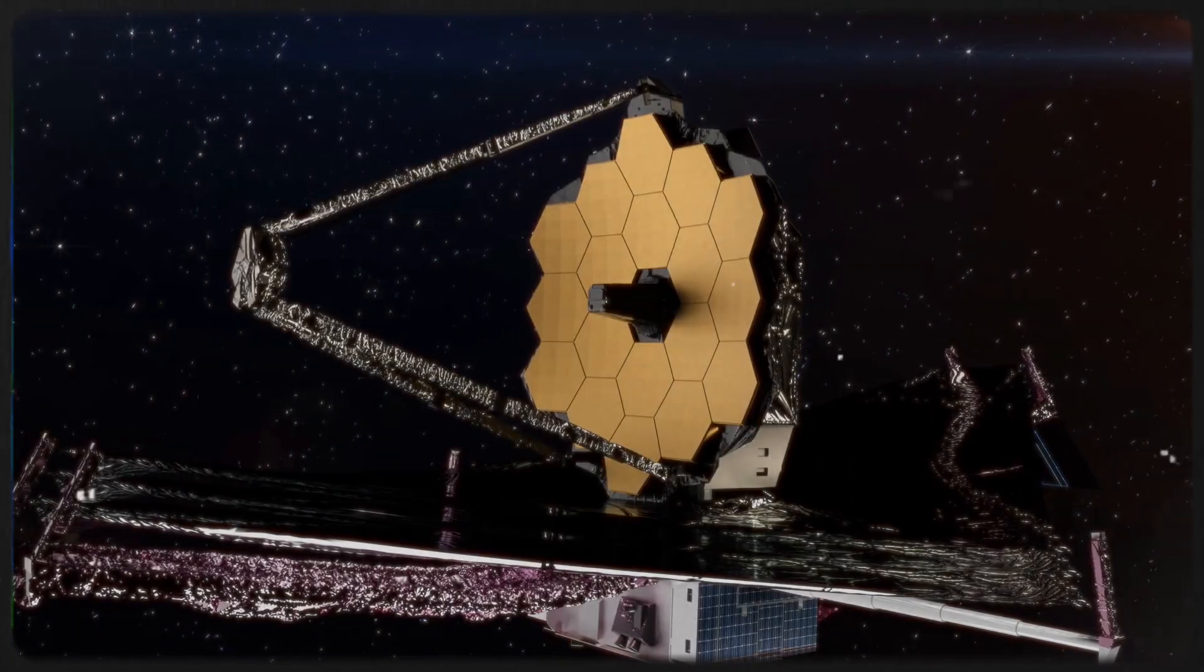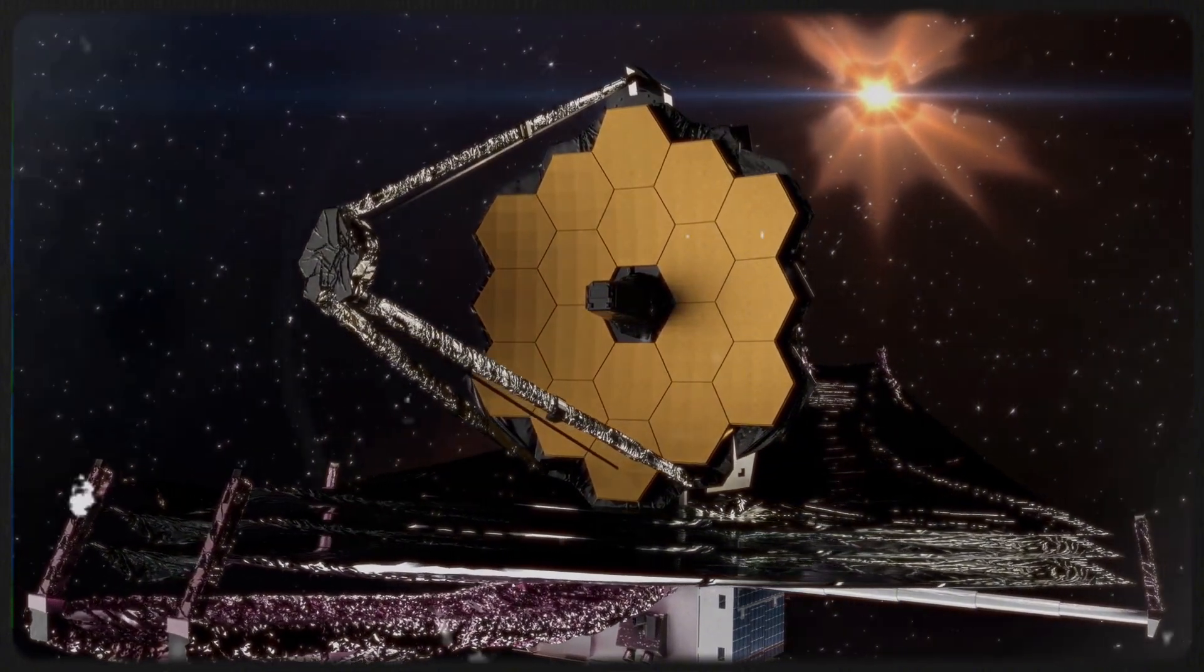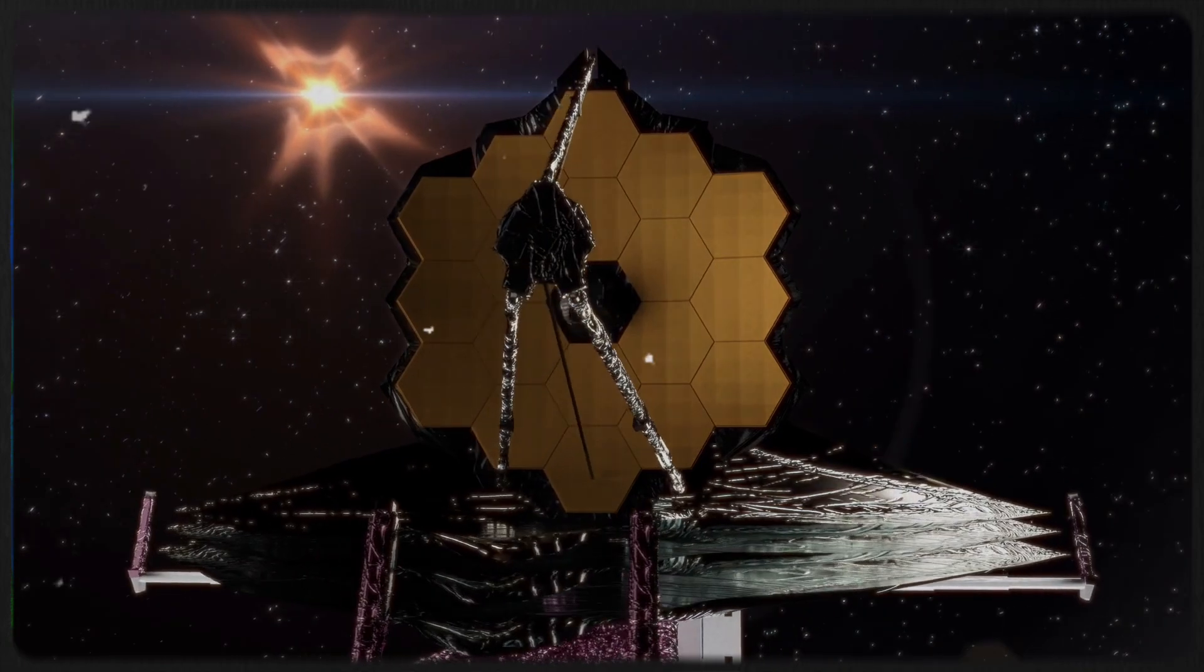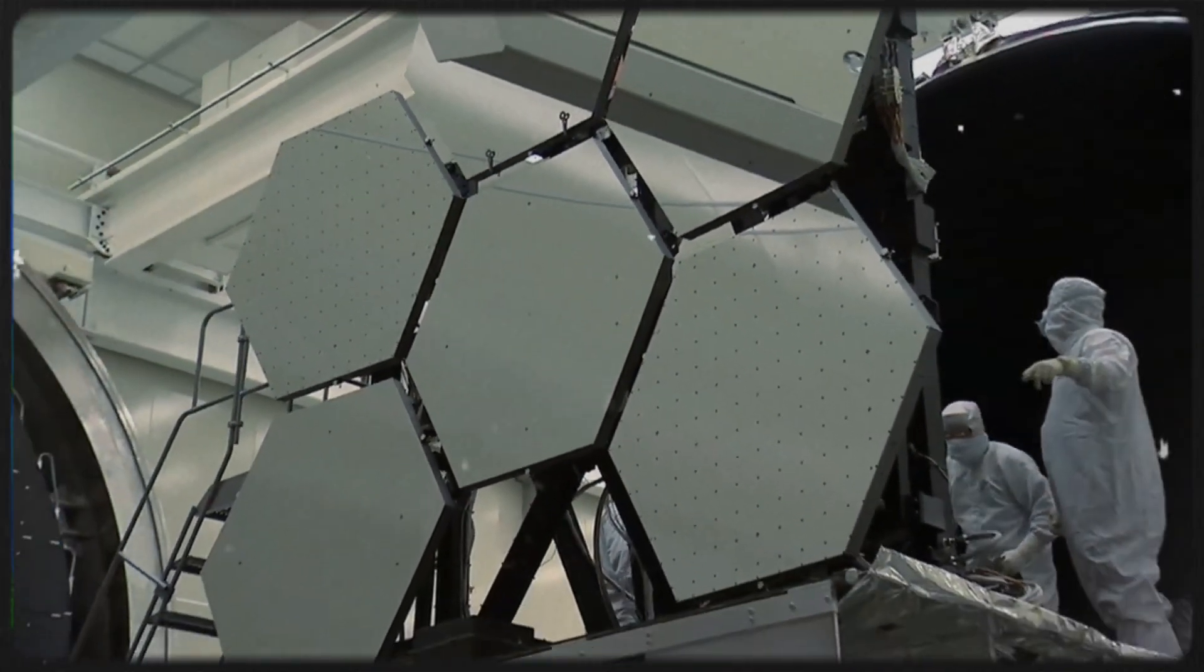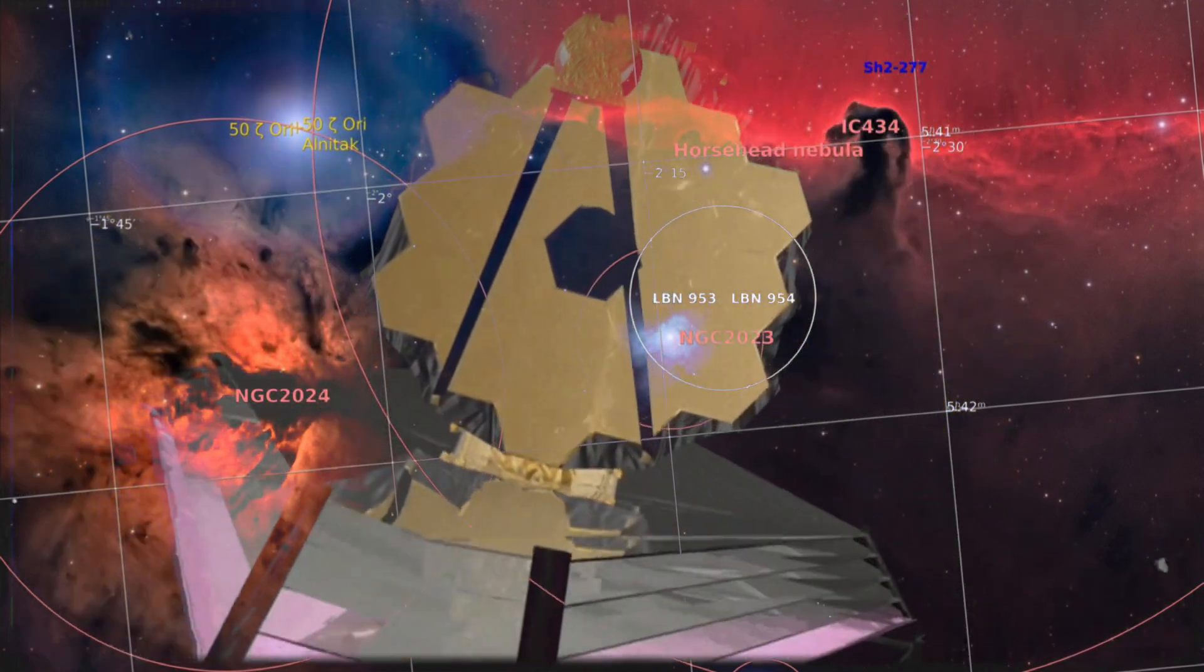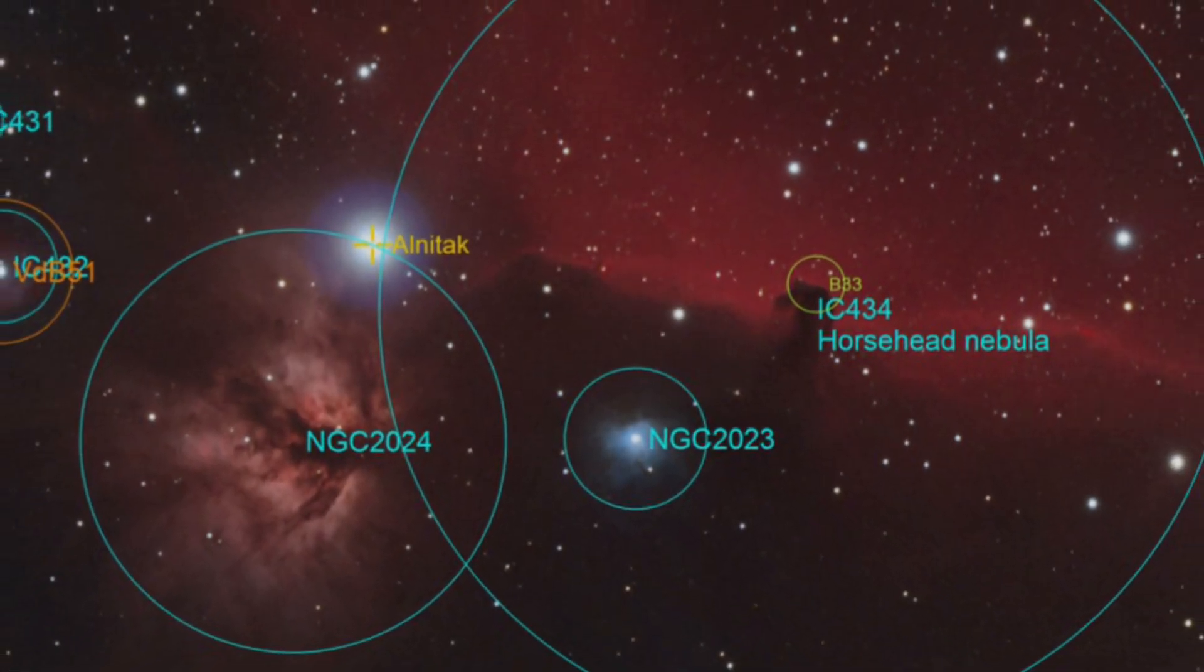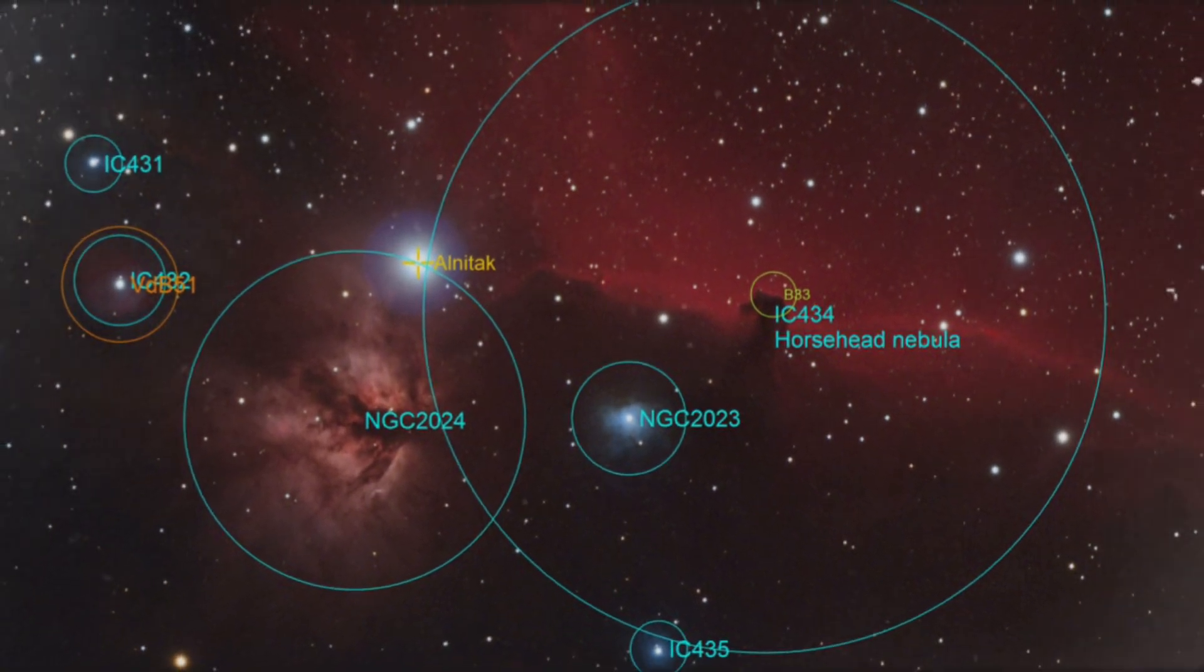And this is where the James Webb Space Telescope comes in. With its advanced infrared vision, Webb can peer through the dusty chaos and pick up the faint heat signatures of newborn brown dwarfs, some of them just a few times more massive than Jupiter. A team of astronomers used Webb's precision to hunt for the very lowest-mass brown dwarfs in the Flame Nebula. What they found was astonishing—objects with as little as two to three times the mass of Jupiter. And Webb's sensitivity goes even further, down to about half of Jupiter's mass. The mission's goal? To explore the minimum mass limit for brown dwarf formation.